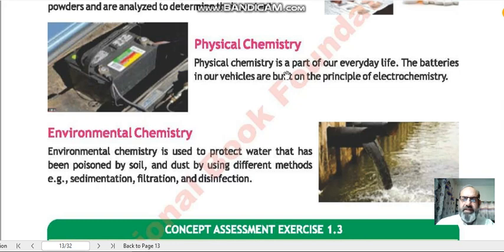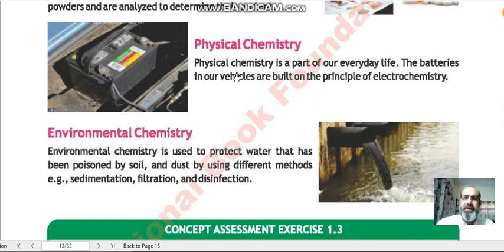Physical chemistry is a part of our everyday life. The batteries in our vehicles are built on the principles of electrochemistry, which is a sub-branch of physical chemistry. In electrochemistry, we learn how to convert electrical energy to chemical energy and vice versa — this is the principle on which batteries are created. We can convert chemical energy into electrical energy, which is used in our cars and other vehicles.